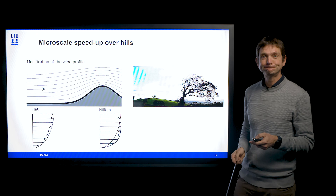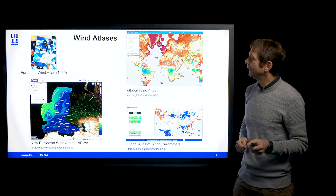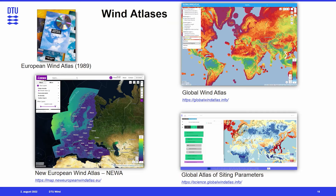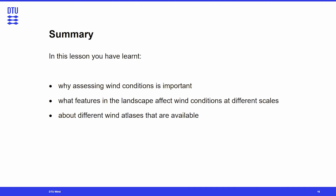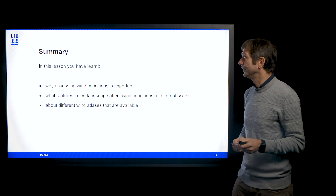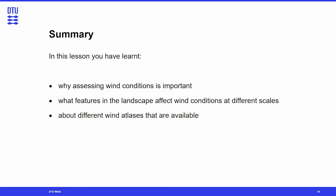Wind atlases that are readily available include the European Wind Atlas, published in 1989 as a book and CD. More recently, the way wind atlases are disseminated has changed — we now have the New European Wind Atlas, the Global Wind Atlas, and a Global Atlas of Siting Parameters that focuses on parameters related to turbine design. In summary, in this lesson you have learnt about why assessing wind conditions is important, what features in the landscape affect wind conditions at different scales, and the different wind atlases that are available.